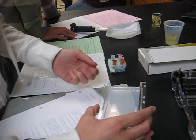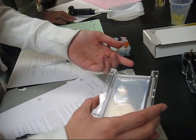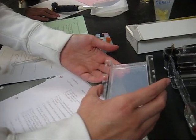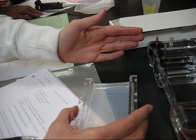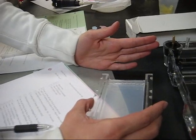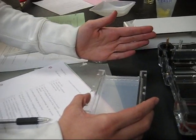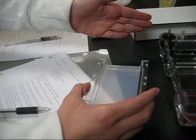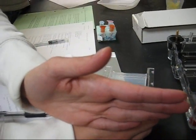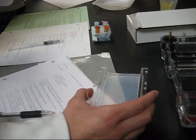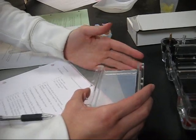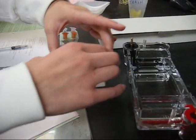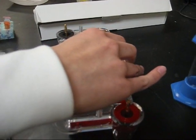We are now loading the gel tray into the electrophoresis machine. We are going to place the wells near the negative charge, because DNA is negatively charged, so it will repel from the negative side and move to the positive side, which will, at the end of the experiment, show us the shortest and longest length of the dye.